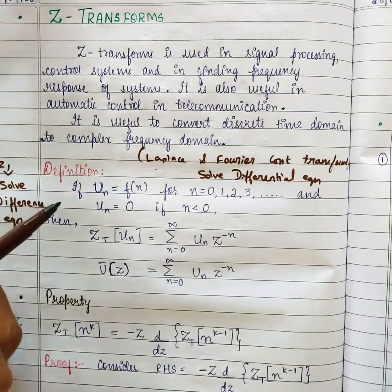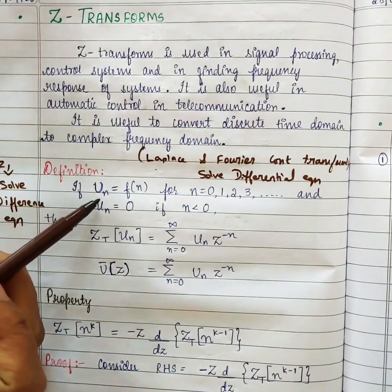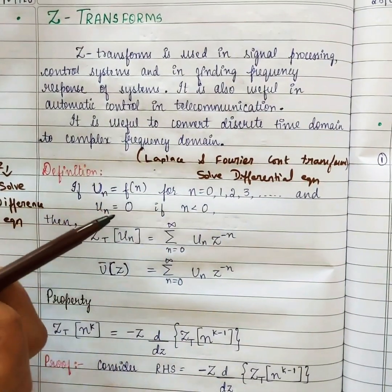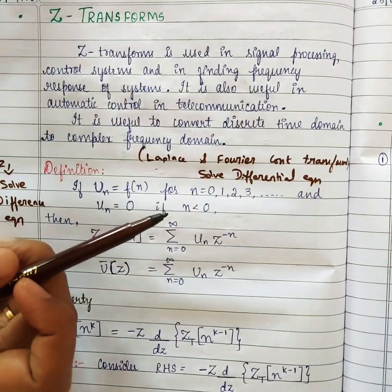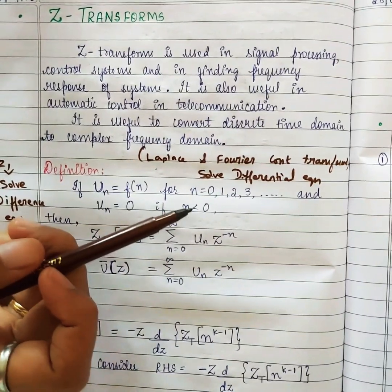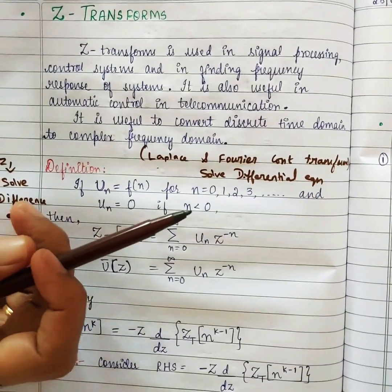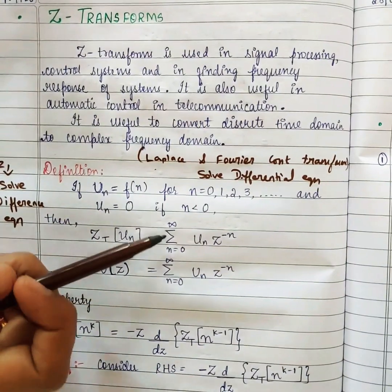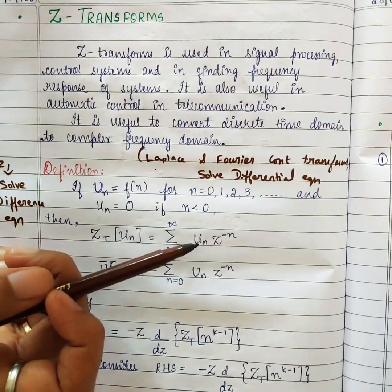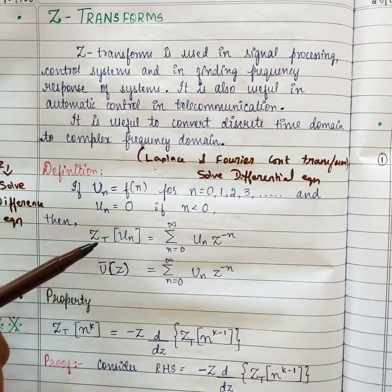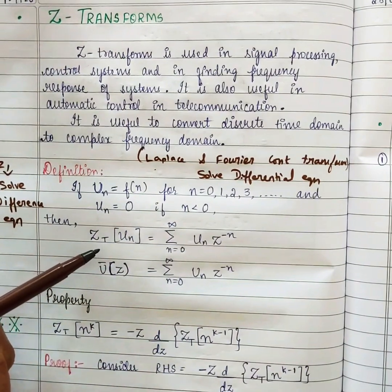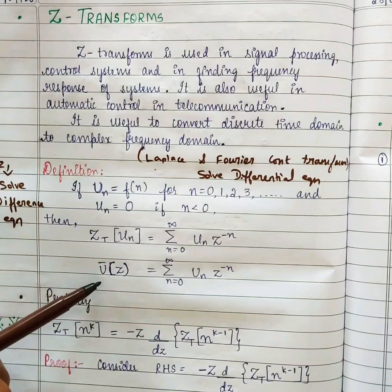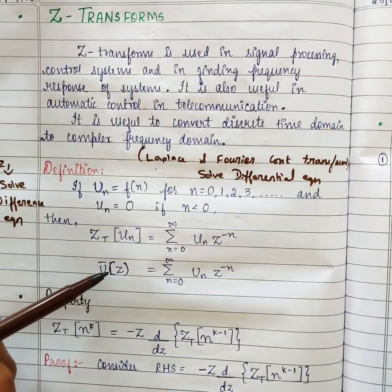Here goes the definition. If u_n equals f(n) for n = 0, 1, 2, 3, etc., and u_n equals 0 if n is less than 0 — so it is only for positive values of n — then the Z transform of u_n is summation n equals 0 to infinity of u_n times z to the power minus n. This is denoted as Z_t(u_n), and we can also write this as ū(z). Both are the same.